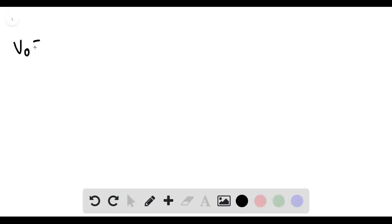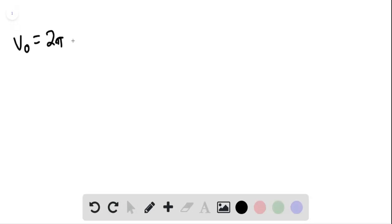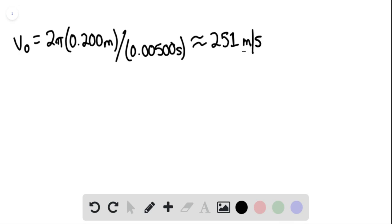We're going to let v initial equal 2π, this is going to be multiplied by 0.200 meters, divided by 0.00500 seconds, and this is approximately 251 meters per second.